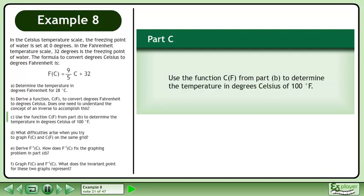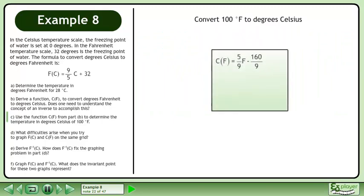In Part C, we'll use the function c from Part B to determine the temperature in degrees Celsius of 100 degrees Fahrenheit. Start with c equals 5 over 9f minus 160 over 9.